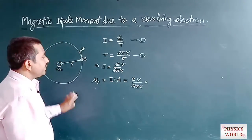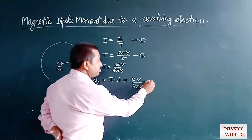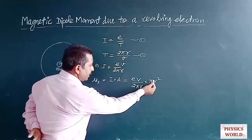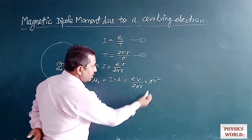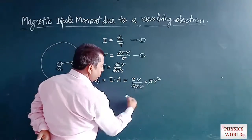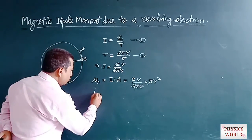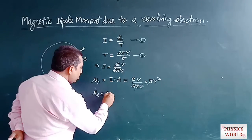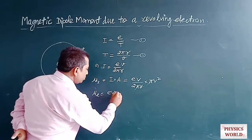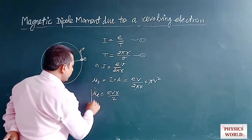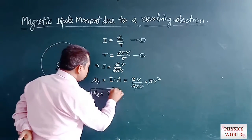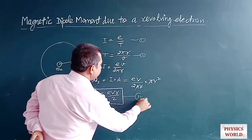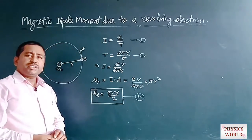Simplifying, π cancels with π and one R cancels, so the value of μL becomes EVR/2. This is equation number 3.